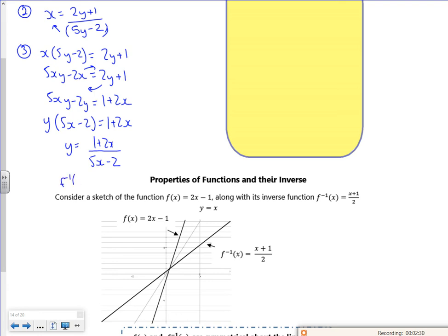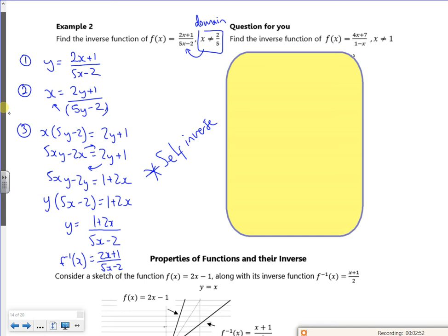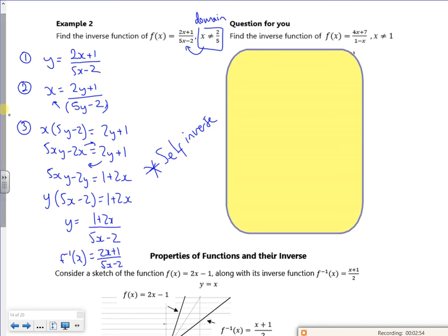So f^(-1)(x) = (2x+1)/(5x-2), and this is called a self-inverse. It's called a self-inverse because when you do the inverse, it perfectly reflects itself in the line y=x. Now, this can't be used when x is not equal to 2/5.